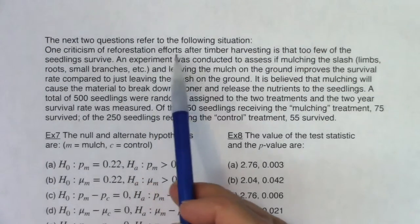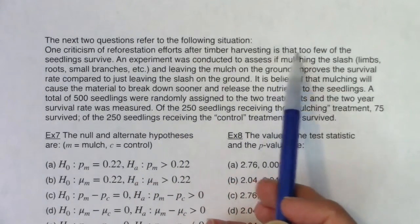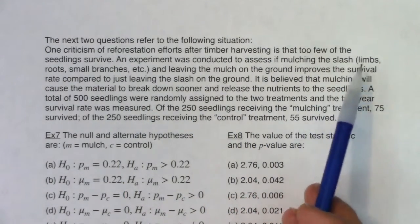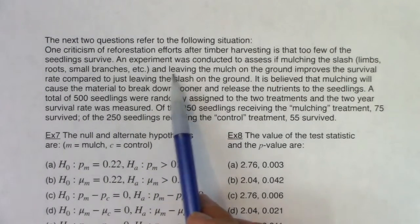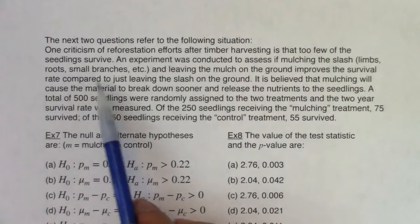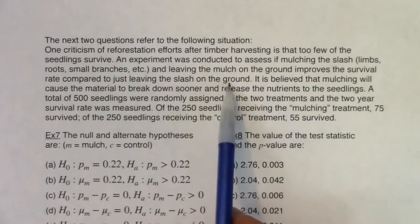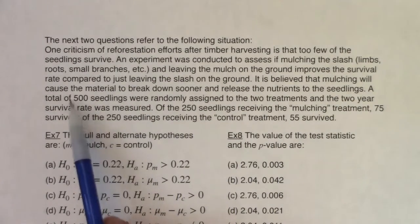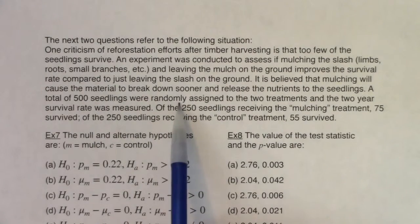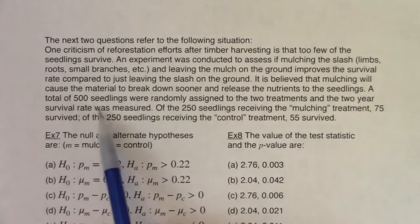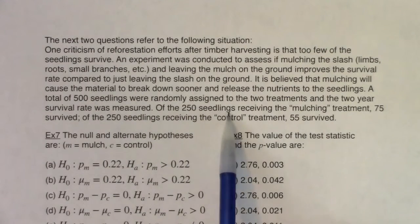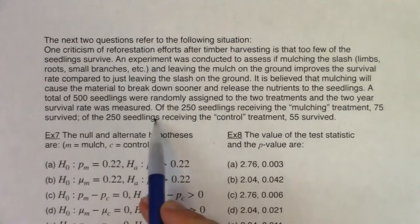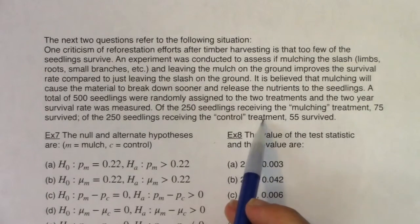One criticism of reforestation efforts after timber harvesting is that too few seedlings survive. An experiment was conducted to assess if mulching the slash — the limbs, roots, small branches, etc. — and leaving the mulch on the ground improves the survival rate compared to just leaving the slash on the ground. It is believed that mulching will cause the material to break down sooner and release nutrients to the seedlings. A total of 500 seedlings were randomly assigned to two treatments and the two-year survival rate was measured. Of the 250 seedlings receiving the mulching treatment, 75 survived; of the 250 seedlings receiving the control treatment, 55 survived.